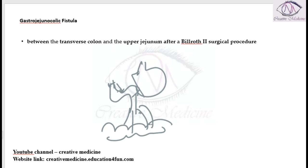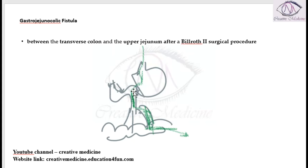Because of this fistula, the food which is present in the stomach enters the jejunum and from the jejunum it enters into the transverse colon directly, so all of the small bowel is bypassed in this way.